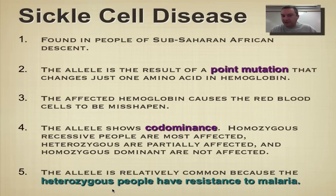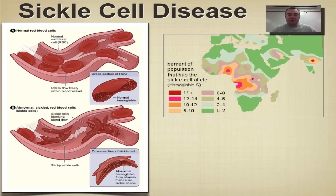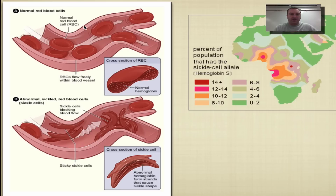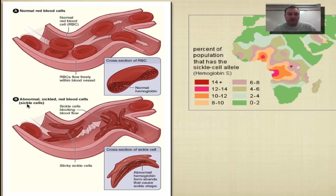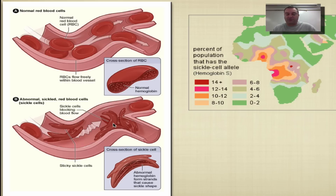Looking at this picture: normal red blood cells look like a bagel where the hole hasn't been pushed all the way through, and they're very flexible — you can see how they fit through a capillary. In contrast, sickle cells have hemoglobin with a different shape, causing the red blood cells to bend. They're not flexible enough to fit through capillaries, so they form a log jam, which is a serious problem for affected individuals.